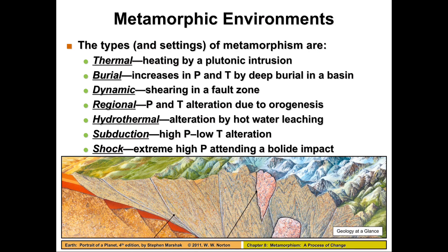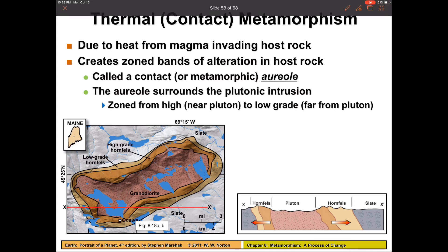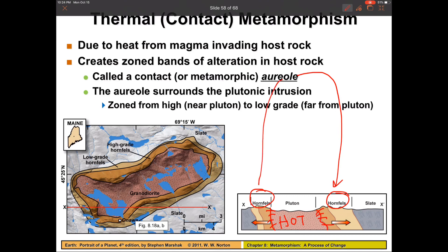Consider whether the effects are temperature-driven or pressure-driven. The first type is contact metamorphism, which happens around igneous intrusions. The intrusion is hot, giving off heat that may not be enough to melt the surrounding rock but could be enough to metamorphose it. This is where we form hornfels. When we talked about igneous rock, we called this the baked zone, but the technical term for this area where hornfels form is called the aureole.